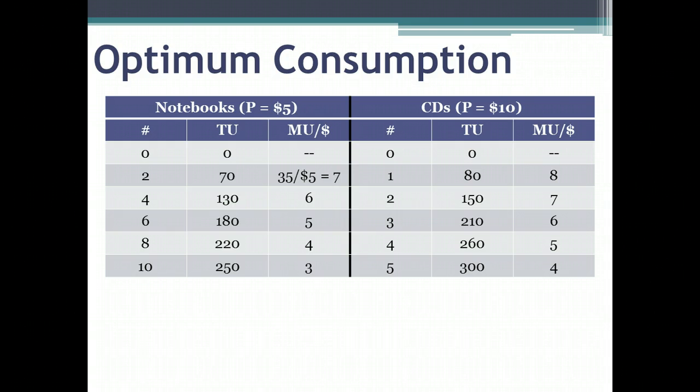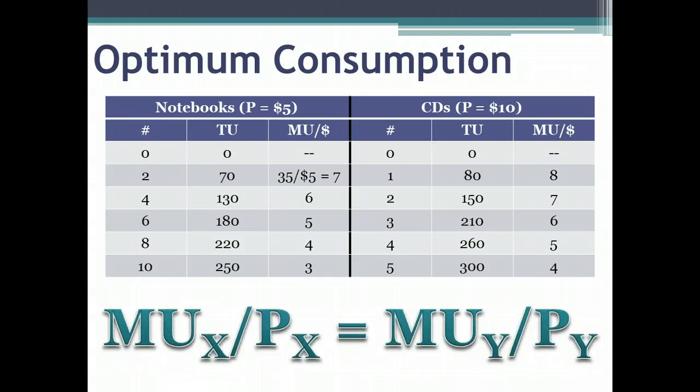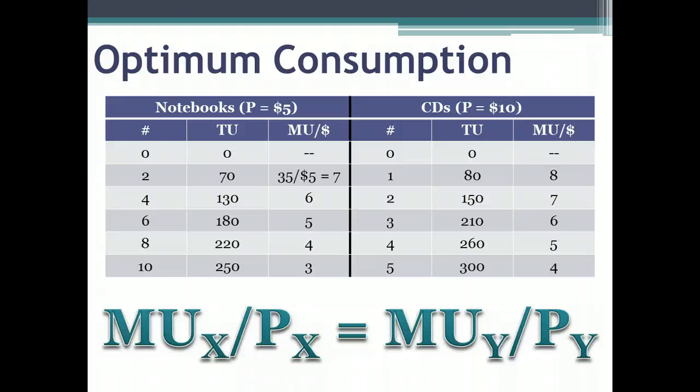And so then our decision would be for the first unit to purchase, I would purchase a CD because it brings me eight units of happiness per dollar as opposed to seven for the notebook. Then my next decision, if I haven't run out of money yet, is to say, well, both notebooks and CDs both give me seven utils per dollar, so I'm indifferent between the two and I'll purchase a pack of two notebooks and a second CD. And then I would keep going down until I found the point at which the last point at which the marginal utility of notebooks per dollar spent is equal to the marginal utility of CDs per dollar spent and where I've run out of money.